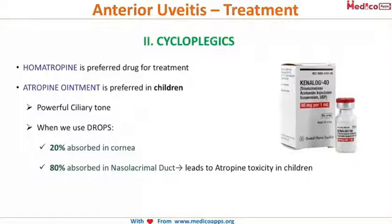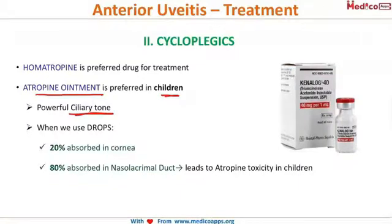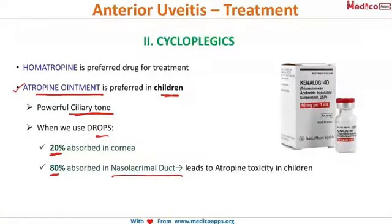Homatropine is the preferred drug for adults, while atropine ointment is preferred for children. This is because ciliary tone is very high in children, requiring a strong cycloplegic. Drops are avoided in children because only 20% is absorbed — the remaining 80% drains through the nasolacrimal duct into systemic circulation, risking atropine toxicity.